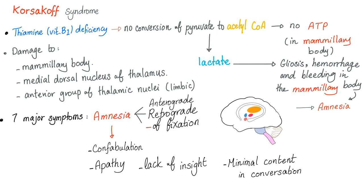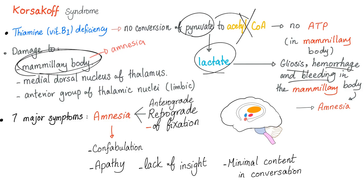In the previous video, I've talked about Korsakoff syndrome. This is a thiamine or B1 deficiency. You get memory problems due to damage of the mammillary bodies, among others. You cannot convert pyruvate into acetyl-CoA. The pyruvate will become lactate instead leading to gliosis, hemorrhage, and bleeding in the mammillary body leading to amnesia.